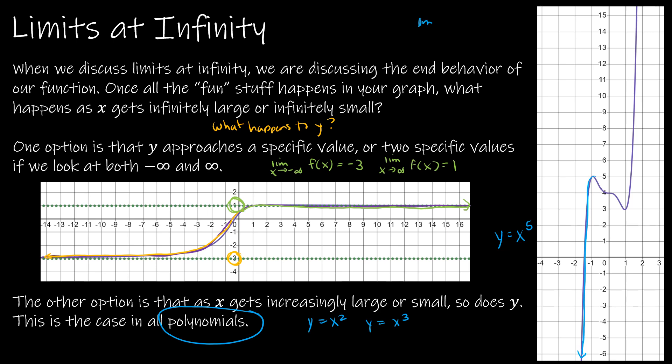So in this case, the limit as x approaches negative infinity, and we'll call it g(x), would be negative infinity. It's going down forever.